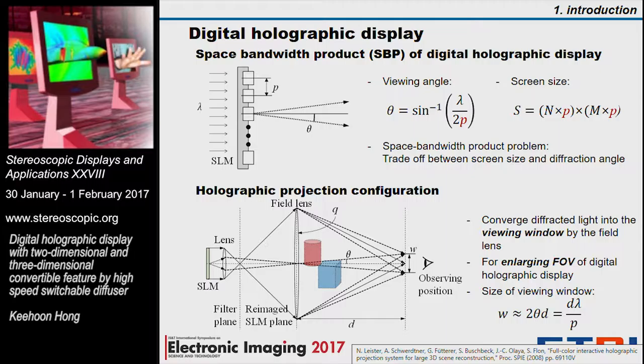Looking more closely at digital holographic display: it generally reconstructs 3D images by illuminating a coherent light, which is a laser, to a hologram uploaded on the SLM. A spatial bandwidth product is an important performance measure for the holographic display. The space is the size of the hologram, and the bandwidth is the maximum spatial frequency of the hologram, which is determined by the pixel pitch. This pixel pitch also determines the diffraction angle, which is similar to the viewing angle.